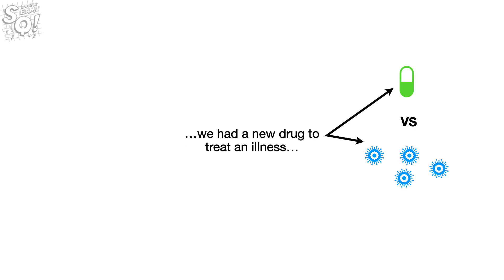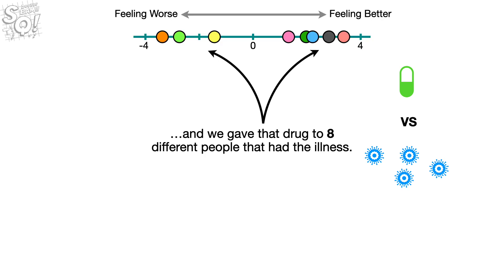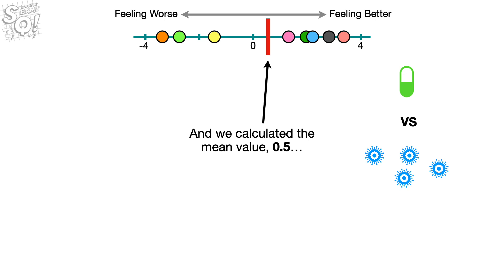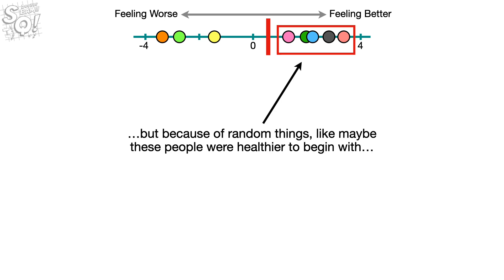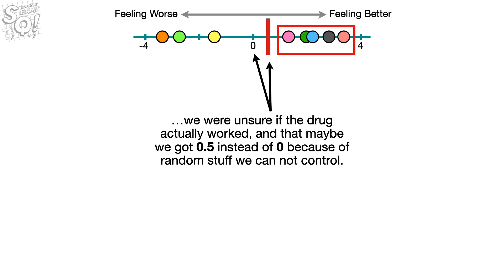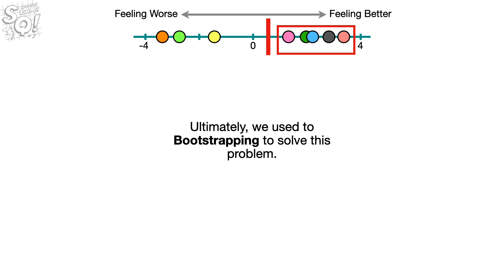In Bootstrapping Part 1, we had a new drug to treat an illness, and we gave that drug to 8 different people that had the illness. And we calculated the mean value, 0.5, but because of random things, like maybe these people were healthier to begin with, we were unsure if the drug actually worked, and that maybe we got 0.5 instead of 0 because of random stuff we cannot control. Ultimately, we used bootstrapping to solve this problem.